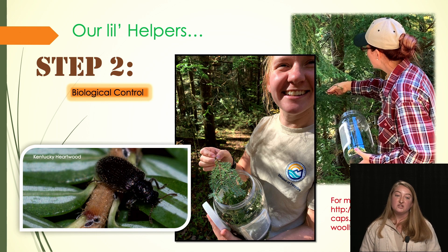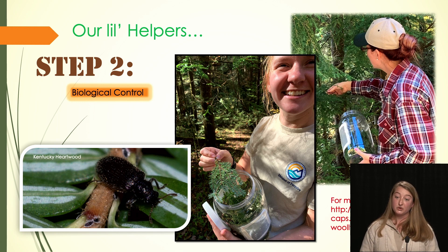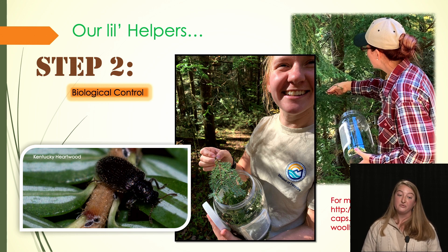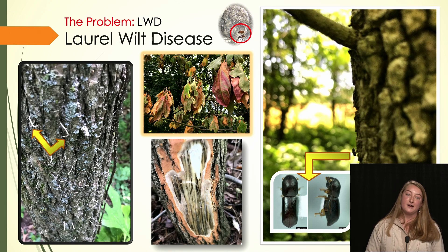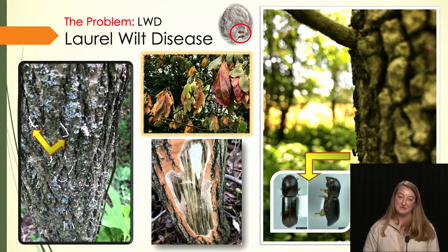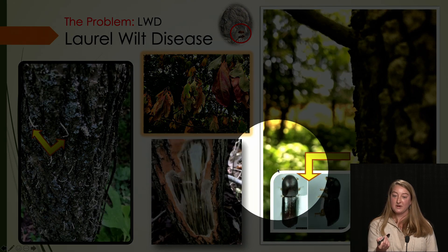The second step in our integrated pest management approach is biological control. We have what I call our little helpers: two species of predatory beetles deployed at selected sites in hopes of creating a future field insectary. We can be very confident these beetles won't create another problem because they feed solely on HWA. If you'd like to learn more, follow the link provided. Lastly, our newest addition to forest health problems in Kentucky is laurel wilt disease, or LWD — part of the insect and disease complex associated with our newest soldier in the army: the red bay ambrosia beetle.